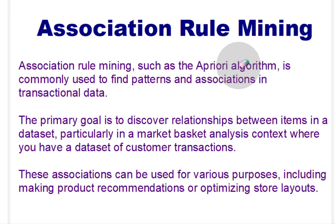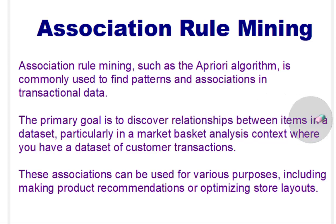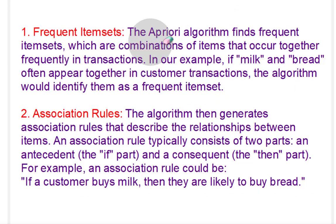The Apriori algorithm is used to find the commonly occurring patterns and associations in transactional data. We have a dataset, and we will find the associations between those items. Our primary goal is to discover the relationship between items in the dataset. We will see one example using market basket data. One of the primary uses is making recommendations — if we are buying something from a market, it will recommend other items based on the relationship of that particular item with others.